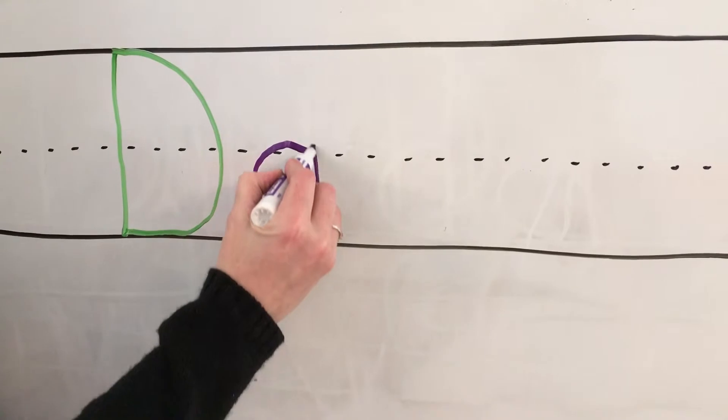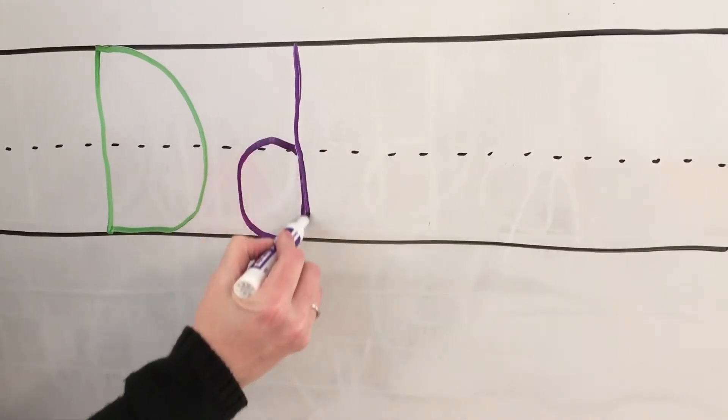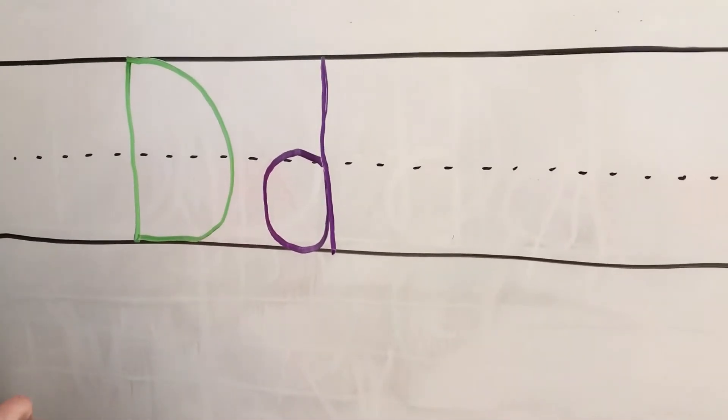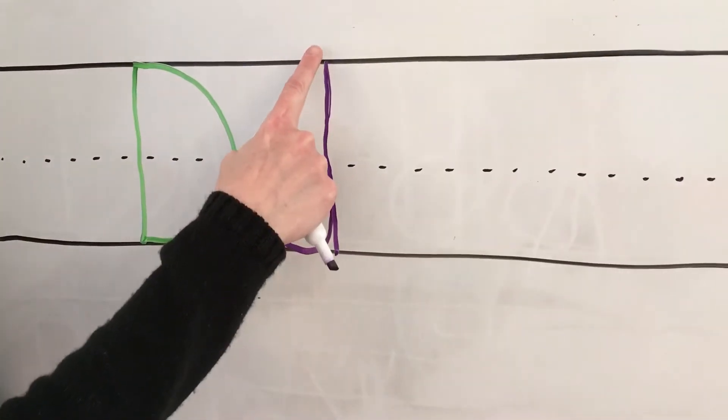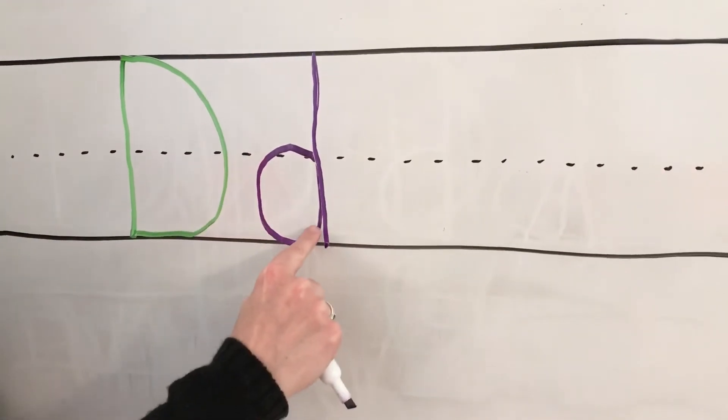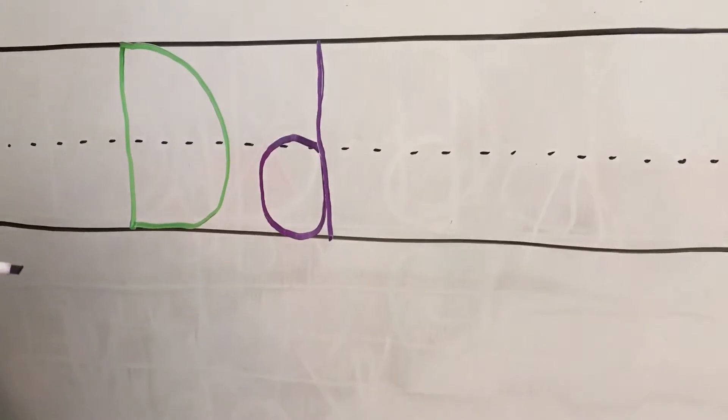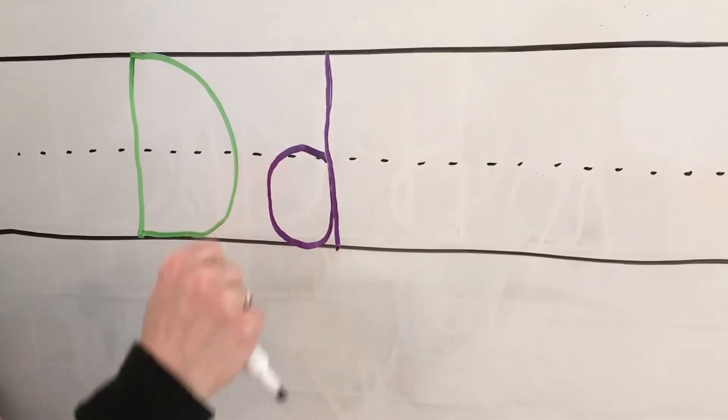Then they're going to go up, touch the top, and straight back down. Important things with this is that they don't start at the top and that they don't pick their pencil up after the c and add a line down. It should be a continuous motion up and down.